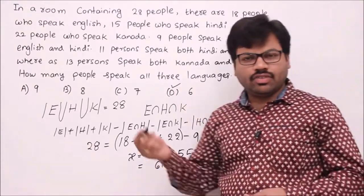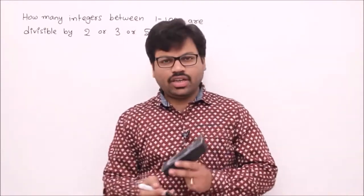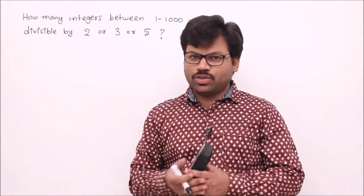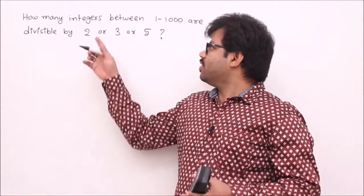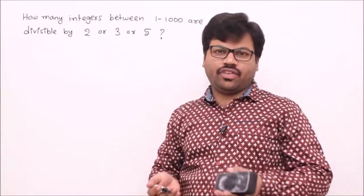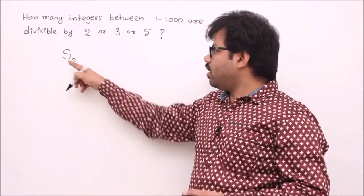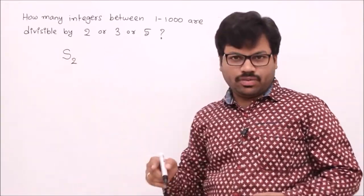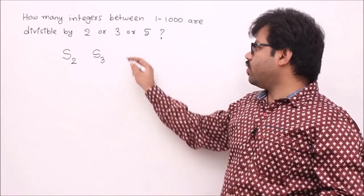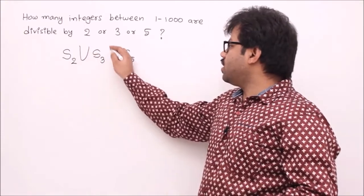Next problem: how many integers between 1 and 1000 are divisible by 2, 3, or 5? Let S2 be numbers divisible by 2, S3 divisible by 3, and S5 divisible by 5 in the range 1 to 1000. We want |S2 ∪ S3 ∪ S5|, which is another application of the Principle of Inclusion-Exclusion.